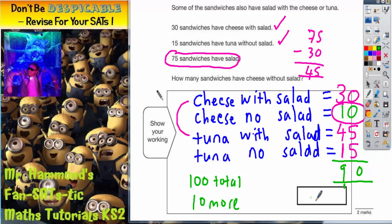So the answer is 10. So how many sandwiches have cheese without salad? It's 10. The important advice for this question is to get clear in your mind the four types of sandwich. Cheese with salad, cheese no salad, tuna with salad, tuna no salad. And then you slowly start to fill in. It's a bit like a jigsaw puzzle.